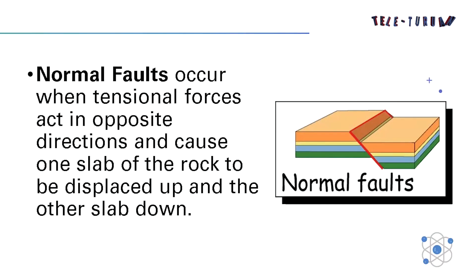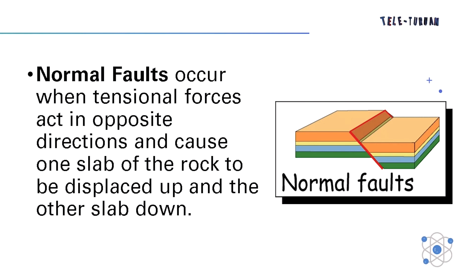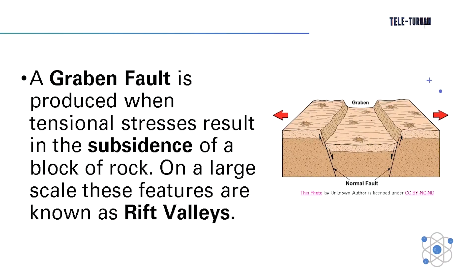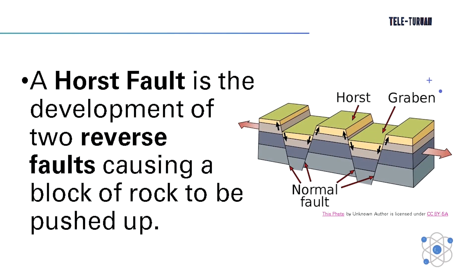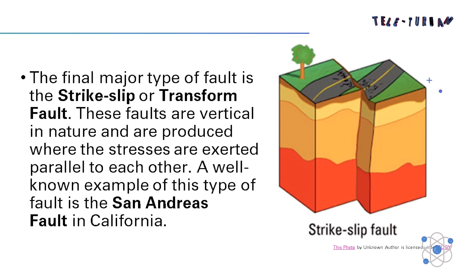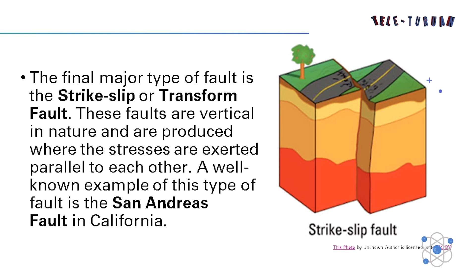There are several kinds of faults, named according to the type of stress that acts on the rock and the nature of movement of the rock blocks on either side of the fault plane. Normal faults occur when tensional forces act in opposite directions, causing one slab of rock to be displaced up and the other down. Reverse faults develop when compressional forces exist, causing one block to be pushed up and over the other. A graben fault is produced when tensional stresses result in subsidence of a block of rock; on a large scale these features are known as rift valleys. A horst fault is the development of two reverse faults causing a block of rock to be pushed up. The final major type is the strike-slip or transform fault, which is vertical in nature and produced where stresses are exerted parallel to each other. A well-known example is the San Andreas Fault in California.